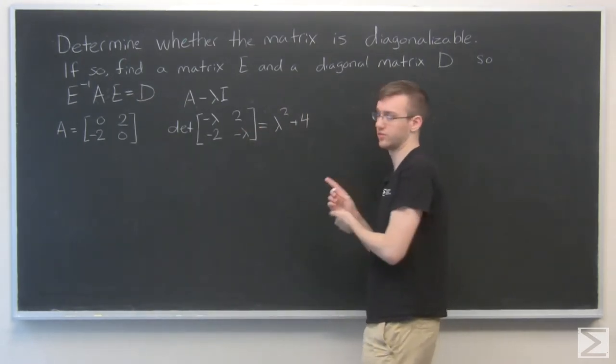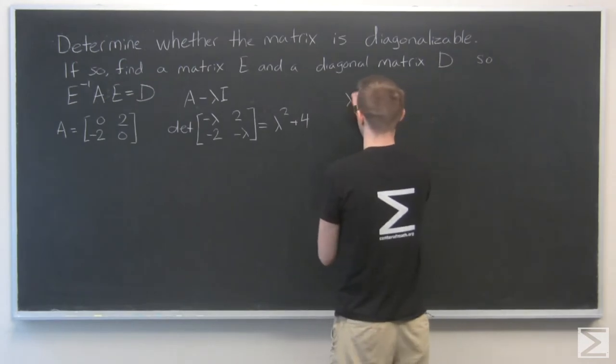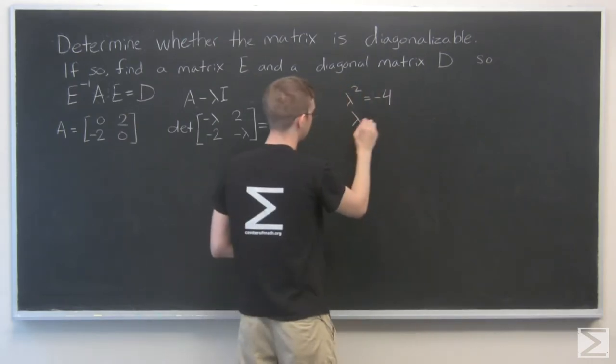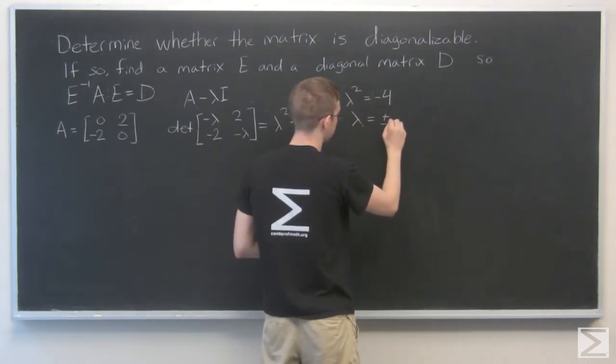Now we need the zeros of this. When that's equal to zero, we're going to get lambda squared equals minus 4, or lambda equals plus or minus 2i.